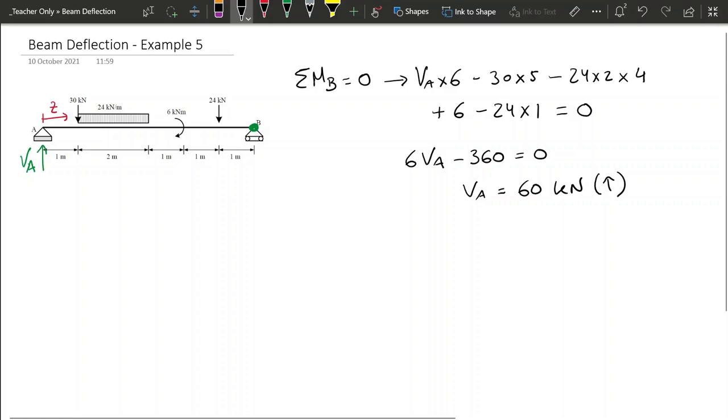So now that we have our reaction VA, we can write it here in green where the support is, so we can start writing our moment equation. Now for complex structures like this one, the equation for moments must be done slowly and very methodically, so then you make sure you don't make any mistake.